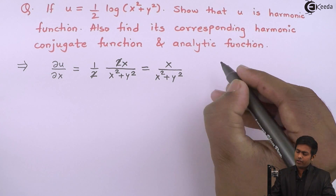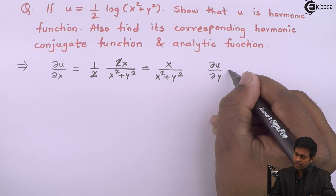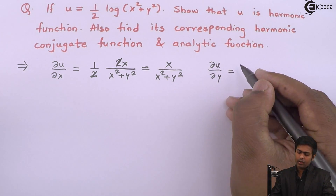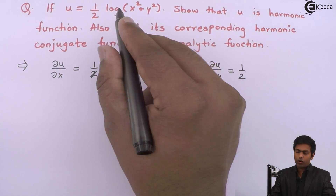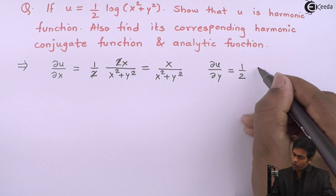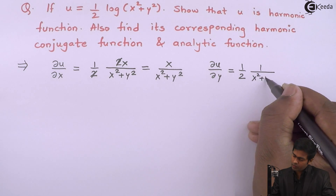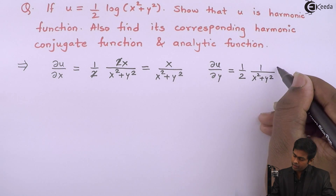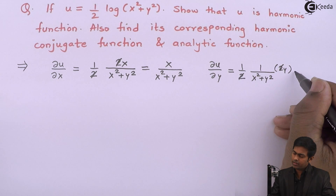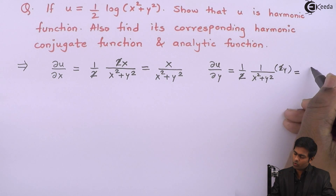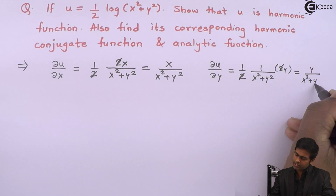Similarly, if we find ∂u/∂y, we get ½ times 1/(x² + y²) into 2y. The 2s cancel, so we get y/(x² + y²).